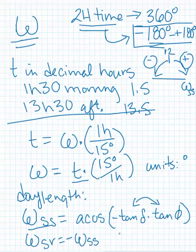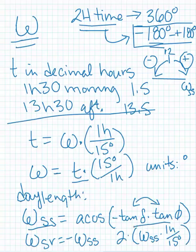And then the last part that you're looking for, hours in a day, is going to be 2 times the sunset hour angle times the conversion of 1 hour per 15 degrees. That's going to give you the number of hours in the day. And you're going to want that for one of your answers as well. OK?